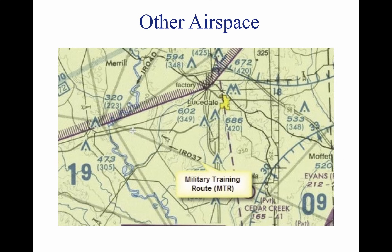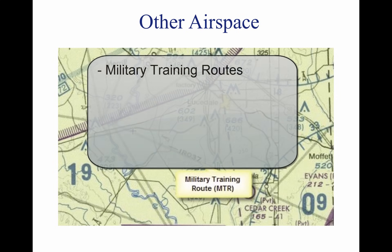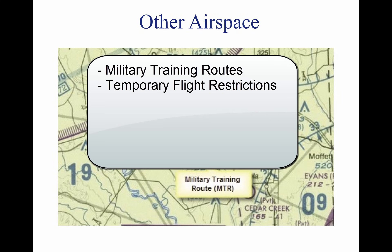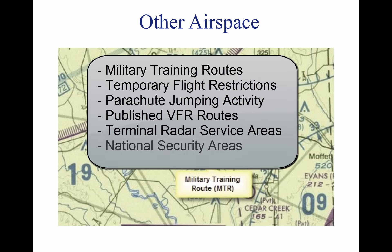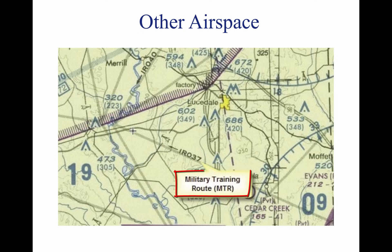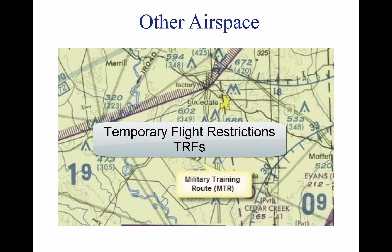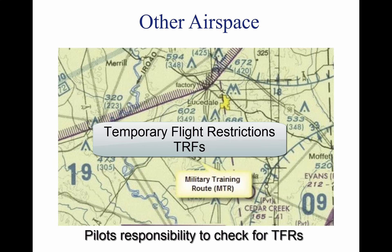Other airspace refers to the majority of the remaining airspace, and includes military training routes, temporary flight restrictions, parachute jump aircraft operations for frequent skydiving activity, published VFR routes, terminal radar service areas, and national security areas. Military training routes are established typically below 10,000 feet but above 1,500 feet above ground level, at speeds in excess of 250 knots. Temporary flight restrictions are temporary restrictions around areas to protect people and property from damage or make an area less congested for emergency aircraft. It is always a pilot's responsibility to make sure there are no TFRs in the area they are flying.